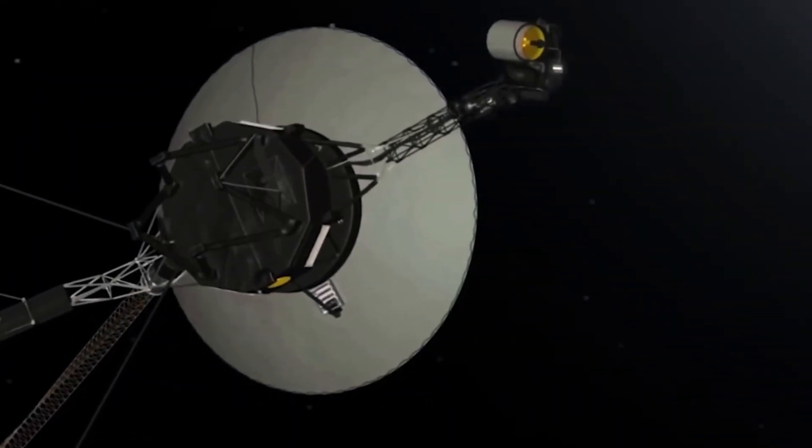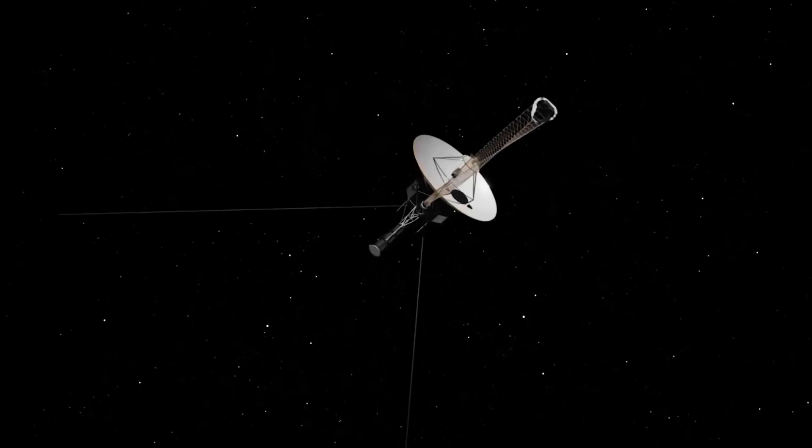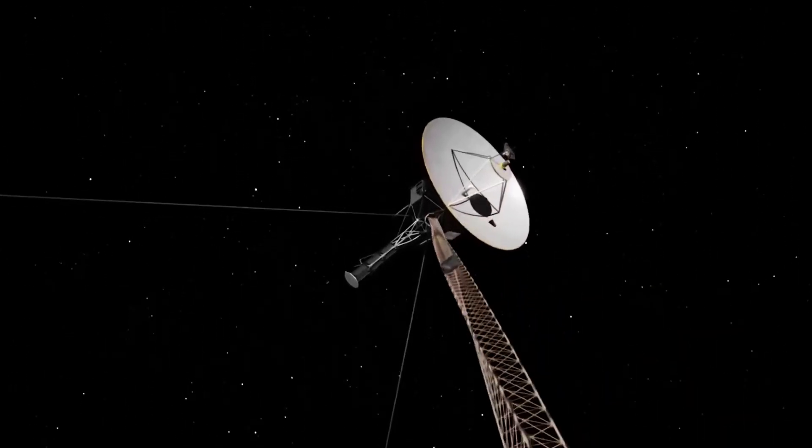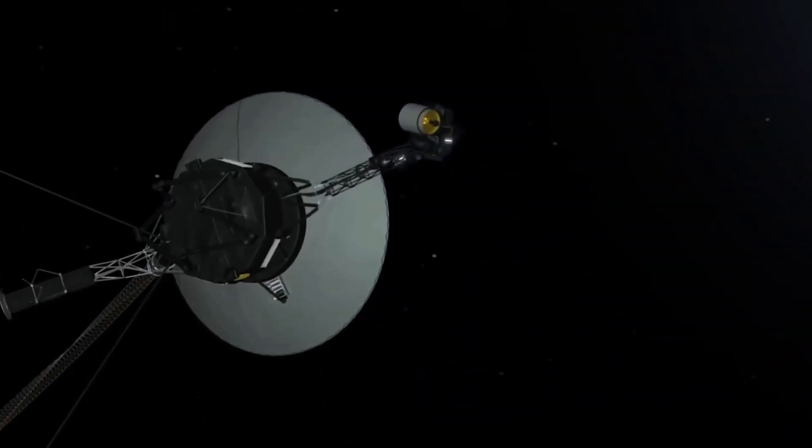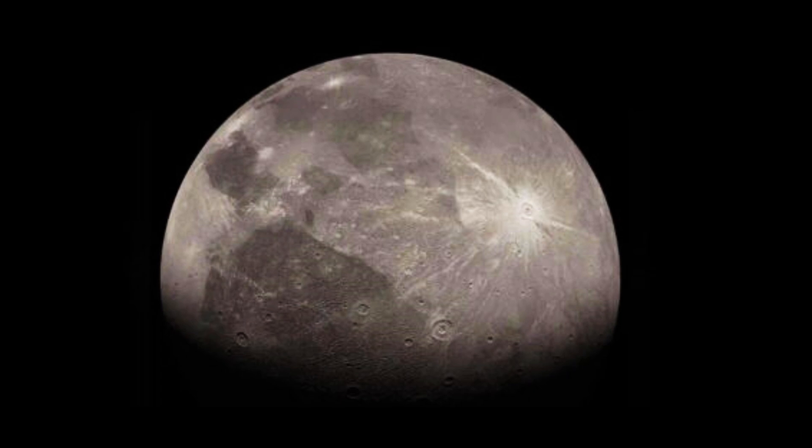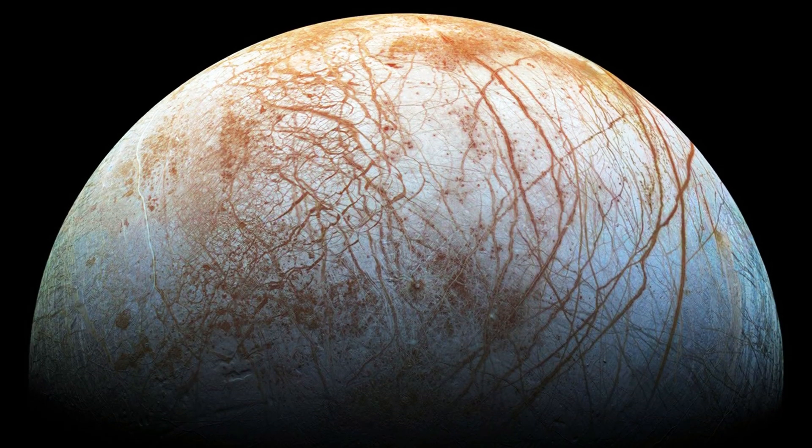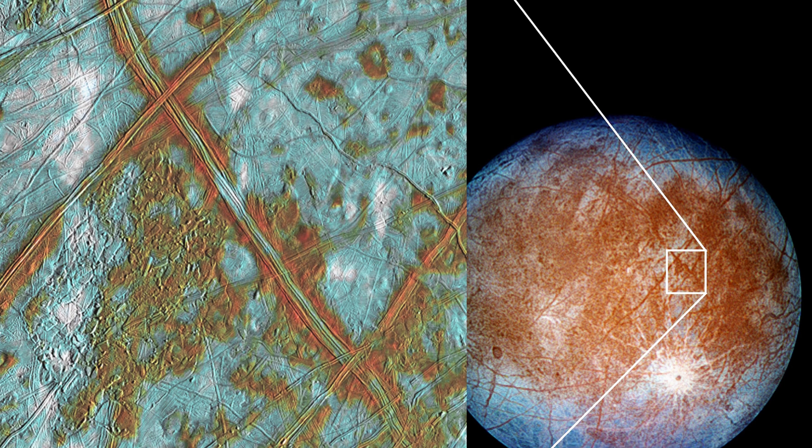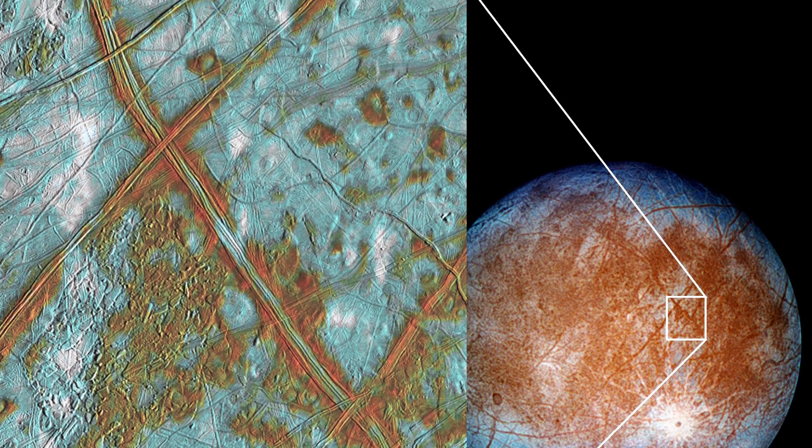By 1979, both probes had reached Jupiter, uncovering its faint rings, discovering three new moons, and capturing stunning images of its largest satellites. They confirmed that Ganymede, not Titan, was the solar system's largest moon, and revealed Europa's smooth, cracked ice surface, sparking theories of a hidden subsurface ocean.